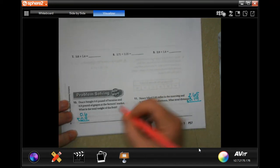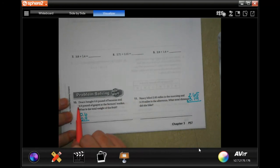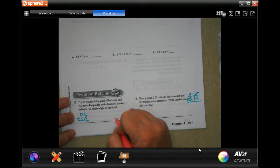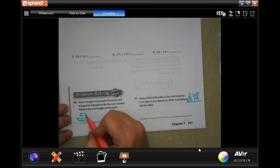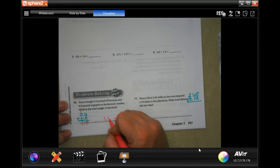Now, for number ten, Deco bought zero point six pounds of bananas and one and zero point nine pound of grapes at the farmers market. What's the total weight of the fruit? We're going to take those two numbers, add them up, make sure that we label it in pounds. So drop our decimal. Six plus nine is fifteen. We're going to carry our one. One plus zero plus zero is one, so one point five pounds.